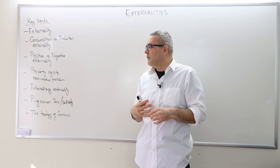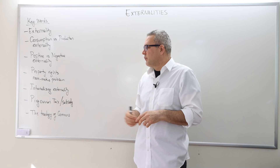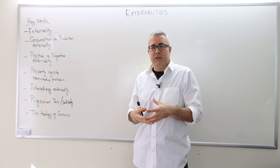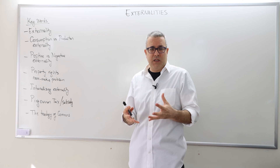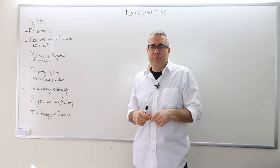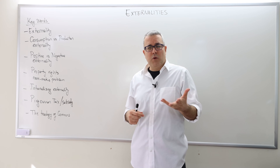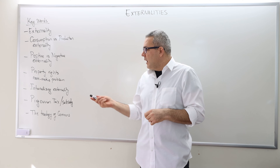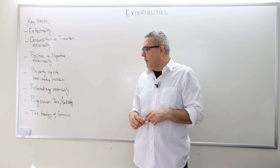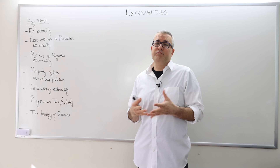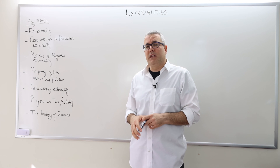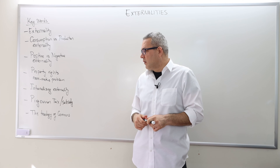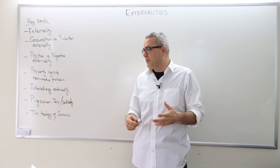The property rights are not well defined, or the second problem is that the agents in the market do not internalize the externality. As a result, the market outcome may not be efficient, as predicted by the first fundamental theorem of welfare economics. Then I'll talk about how we can theoretically get rid of the inefficiency caused by externalities, which is called Pigouvian tax or Pigouvian subsidy.